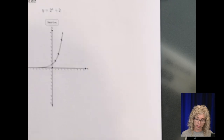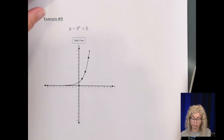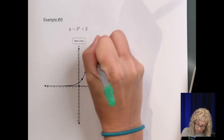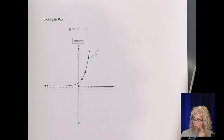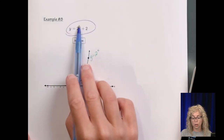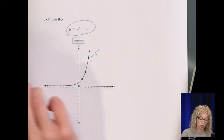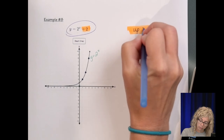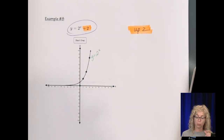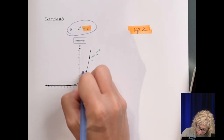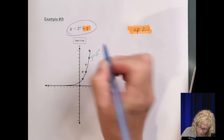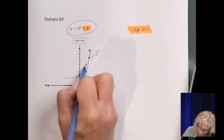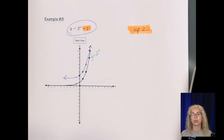Example 8: take this graph of y equals 2 to the x and graph y equals 2 to the x plus 2. There's no plus or minus in the exponent, so this just means plus 2 — take every point and go up 2. If it was negative, we would go down. Take this point up 2, this point up 2, this one up 2, this one up 2, and this one at a half — up 2. Sketch that in, and there's the exponential function showing growth.